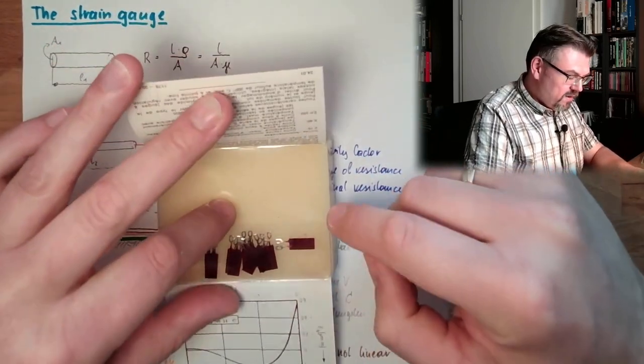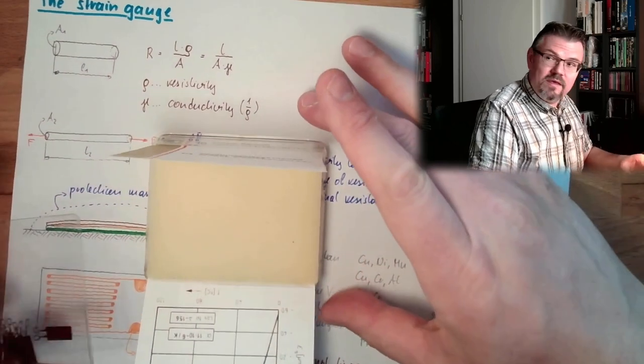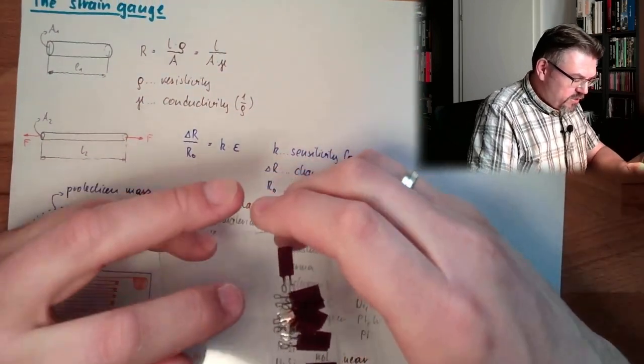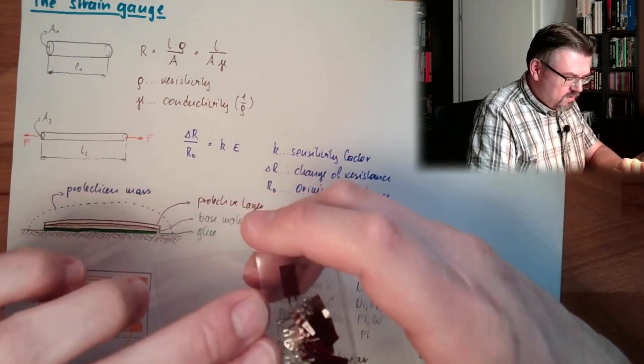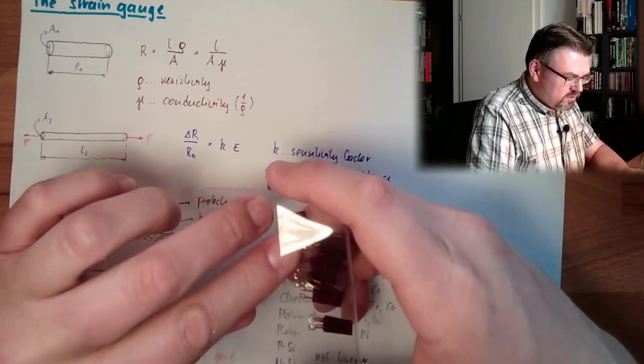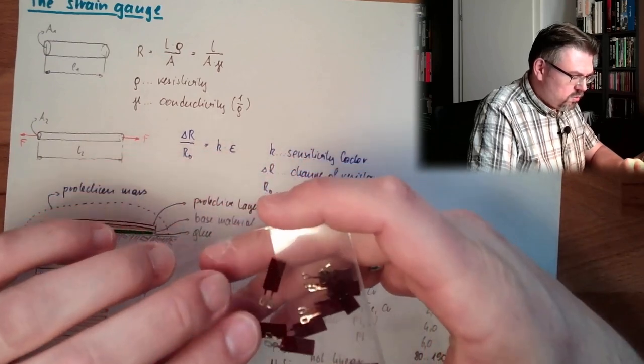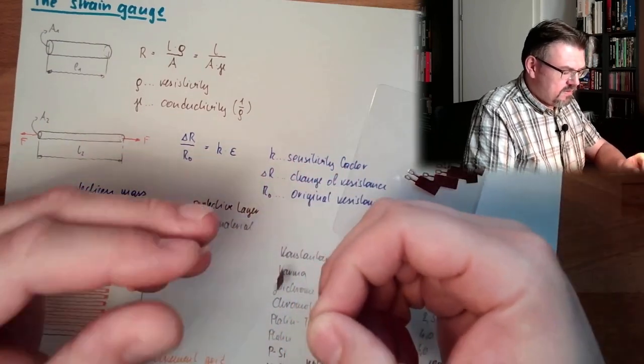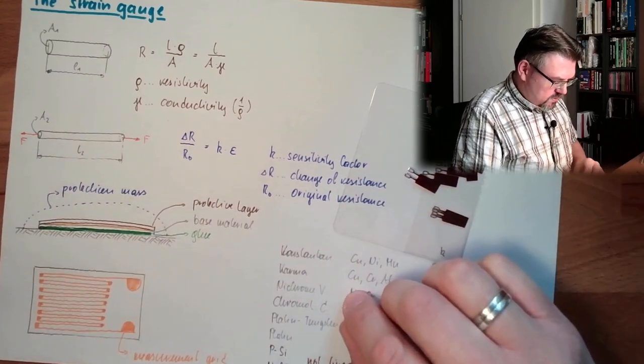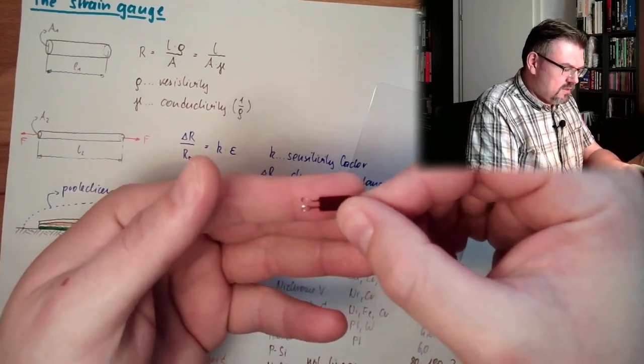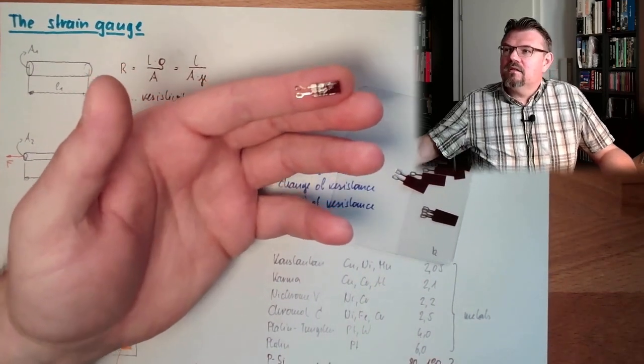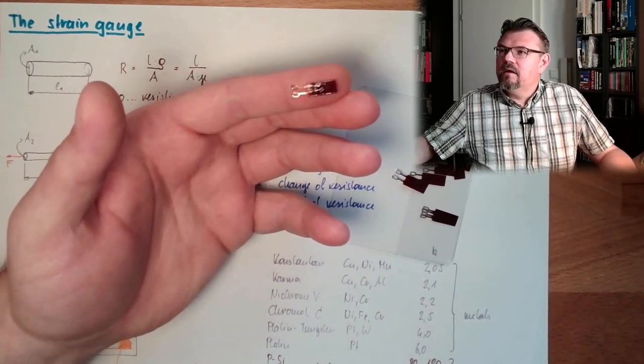This is a strain gauge. This little thing is a strain gauge. I guess you've imagined them bigger, right? There are also bigger ones. Don't be shy. This is a strain gauge. It's not that big, right?